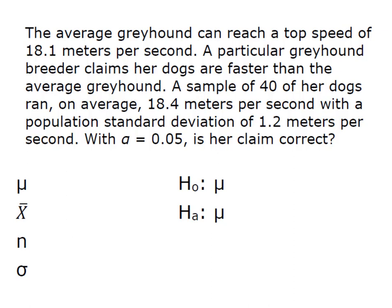So what I'm going to do is I'm going to go through the problem and I'm going to pick out the information that I need. So the average speed of all greyhounds is 18.1 meters per second. So that's my population mean. A particular greyhound breeder, she claims they're faster. We took a sample of 40 dogs, so n is 40. And they ran, on average, 18.4 meters per second, which gives us our sample mean of 18.4. And we had a population standard deviation of 1.2 meters per second.